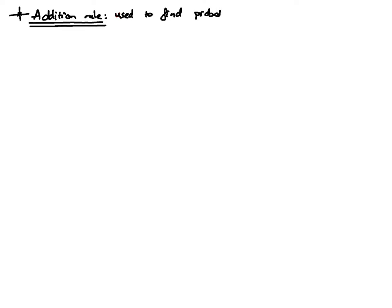The second rule of probability we will learn is the so-called addition rule. We use the addition rule to find the probability of a union. Suppose we have two events A and B. The probability of A union B is equal to the probability of A plus the probability of B minus the probability of the intersection of A and B.